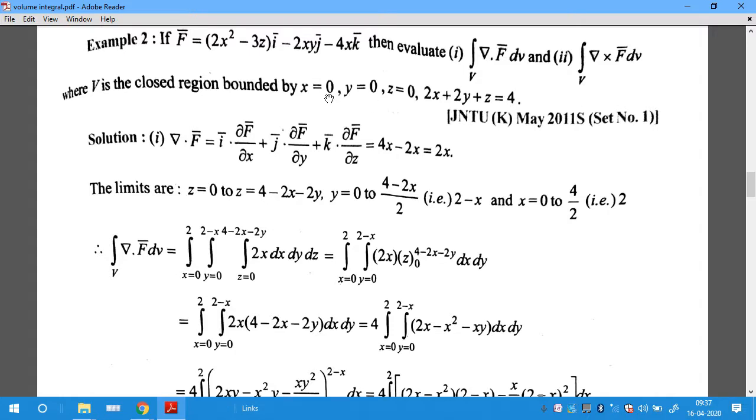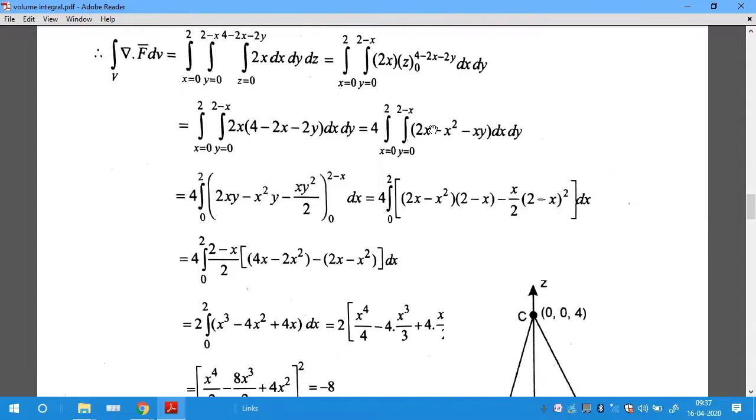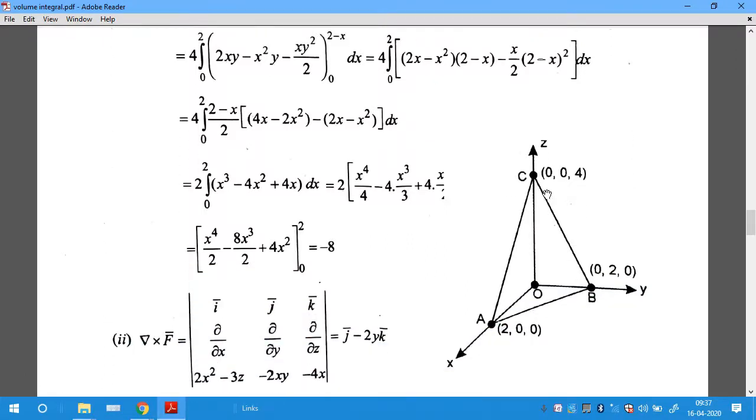The region is bounded by four surfaces: x=0 (the yz-plane), y=0 (the xz-plane), z=0 (the xy-plane), and another plane which intercepts these three axes. The sketch of the shape is shown in the figure.